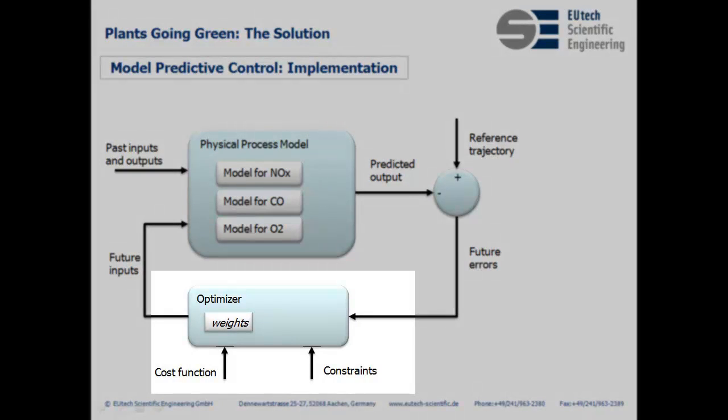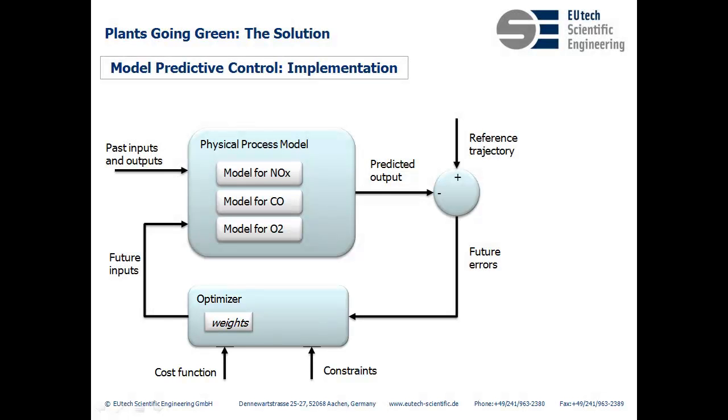We then define our cost function, attach weights to the different variables, and minimize the cost function. The result is the manipulated variables for the next time step. The optimization is done using the model predictive control toolbox.